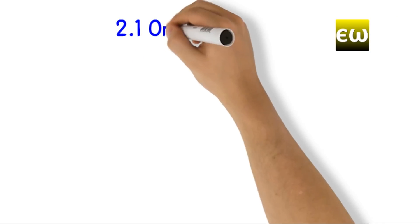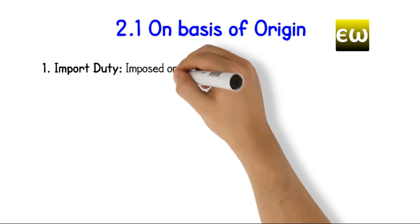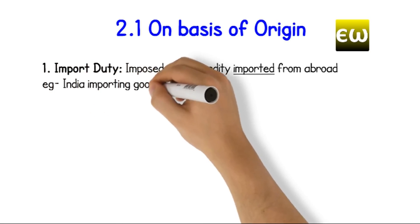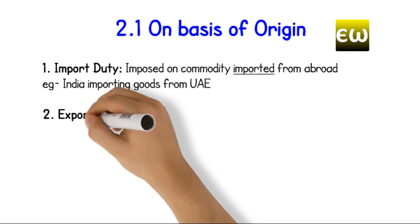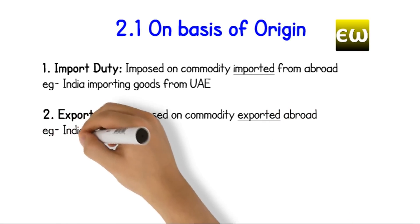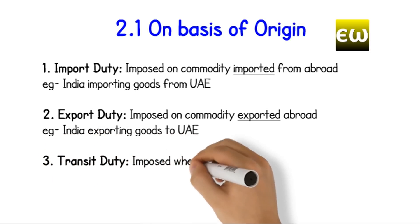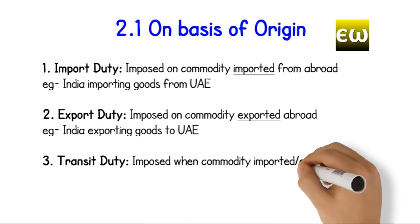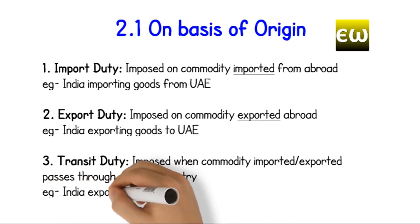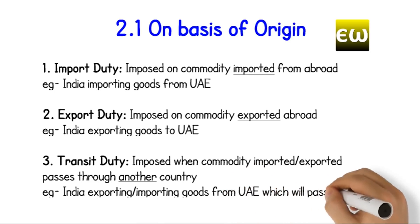On the basis of origin: 1. Import duty, which is imposed on a commodity imported from abroad — for example, India importing goods from UAE. 2. Export duty, which is imposed on a commodity exported abroad — for example, India exporting goods to UAE. 3. Transit duty, imposed when a commodity imported or exported passes through another country — for example, India importing or exporting goods from UAE which pass through Oman.